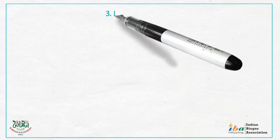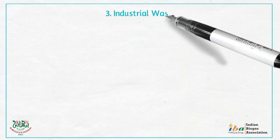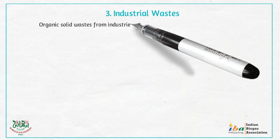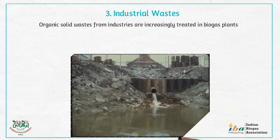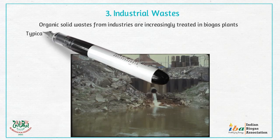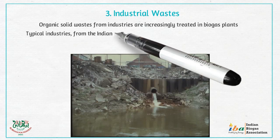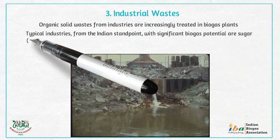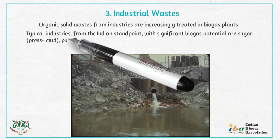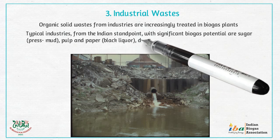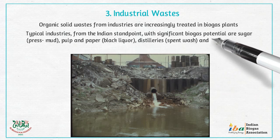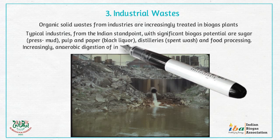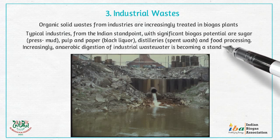3. Industrial wastes. Organic solid wastes from industries are increasingly treated in biogas plants. Typical industries, from the Indian standpoint, with significant biogas potential are sugar press mud, pulp and paper black liquor, distilleries spent wash, and food processing. Increasingly, anaerobic digestion of industrial wastewater is becoming a standard technique.